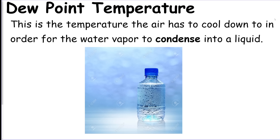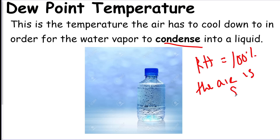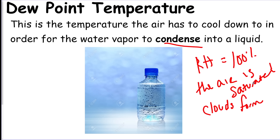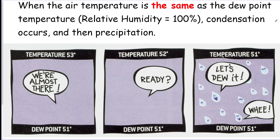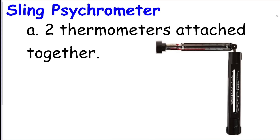As you get closer to 100% relative humidity, condensation occurs — that's when clouds start to form and you can get rain, snow, or sleet. Dew point is the temperature the air has to cool down to for water vapor to condense. When you hit the dew point: condensation occurs, relative humidity is 100%, the air is saturated, and clouds form.